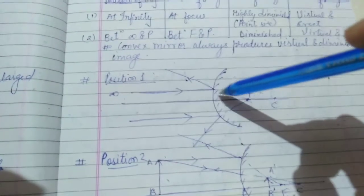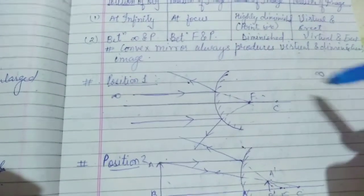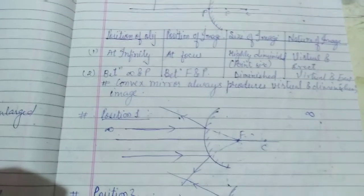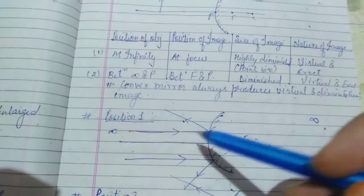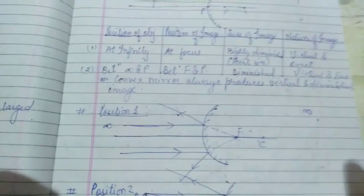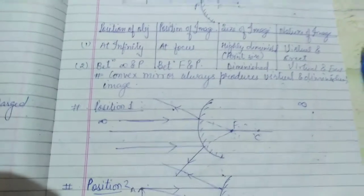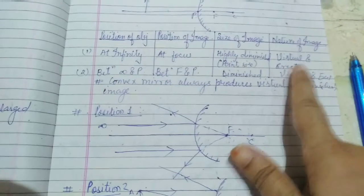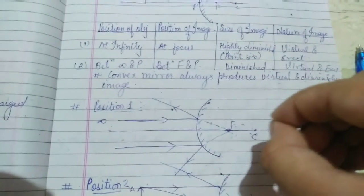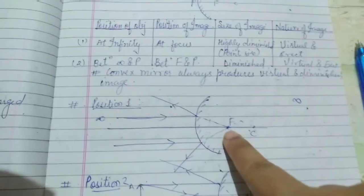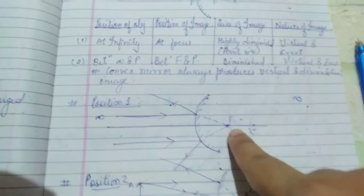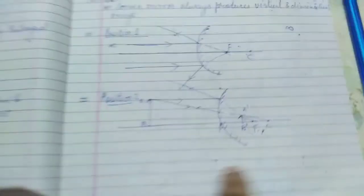The image is formed at the principal focus. Since the rays do not actually meet, the image is virtual — it cannot be obtained on a screen. The image is highly diminished, point-sized, virtual and erect, and it is formed behind the mirror. So this is the result for Case 1 when the object is placed at infinity.